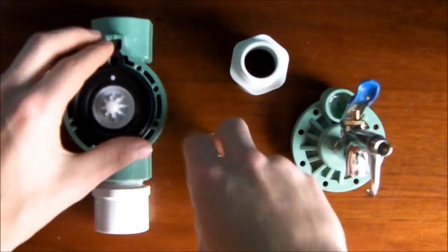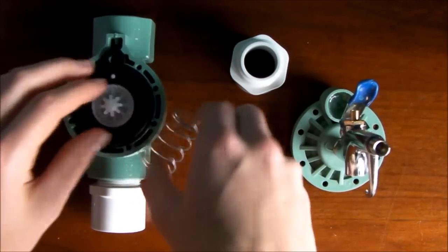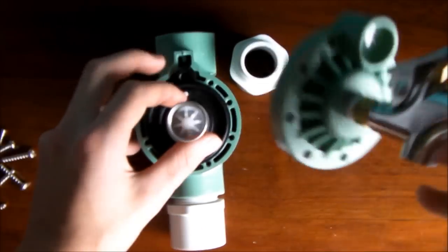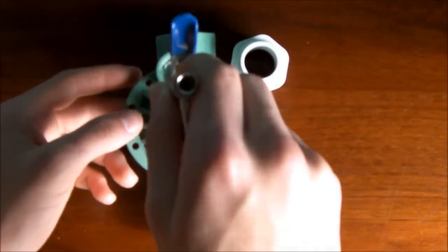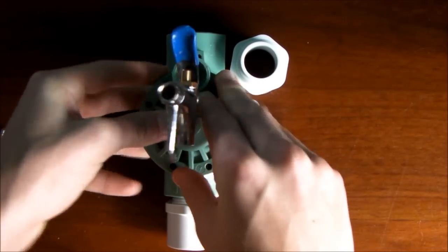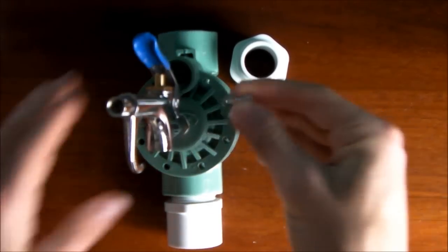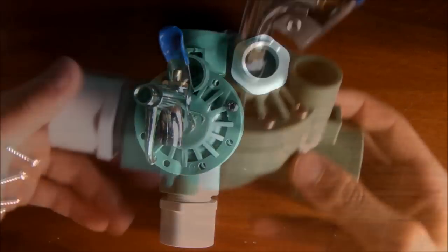All right, now to put it back together, you're going to have your bladder here going first. Then your spring. Then this, make sure you line up this little nub with that hole. And then you pretty much just push it together, and it should kind of stay. And then you got your six screws, which I'm going to put in for you, so you don't have to watch me do that.